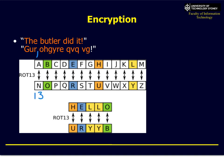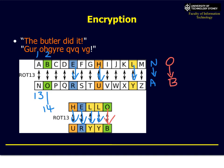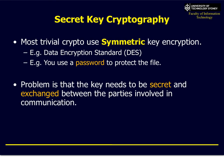What the ROT13 algorithm does is simply shift the characters by 13 — assuming A is 1 and N is 13, B is 2 and O is 14, and so on. When we hit Z it goes back to A. So let's try this out: H becomes U, A becomes R, L becomes Y, O becomes B. It's a very simple algorithm.